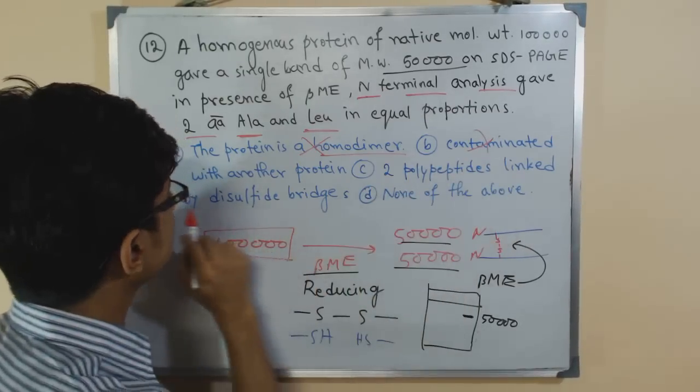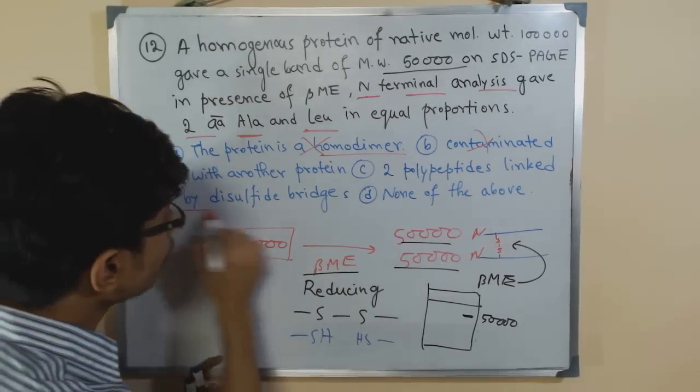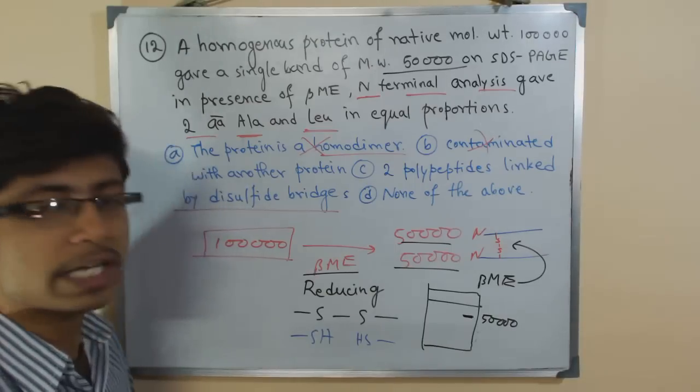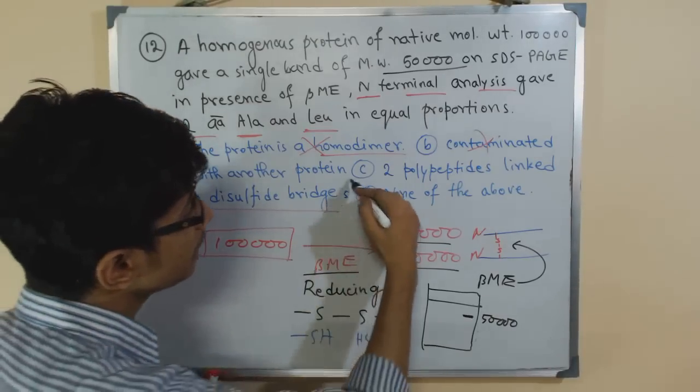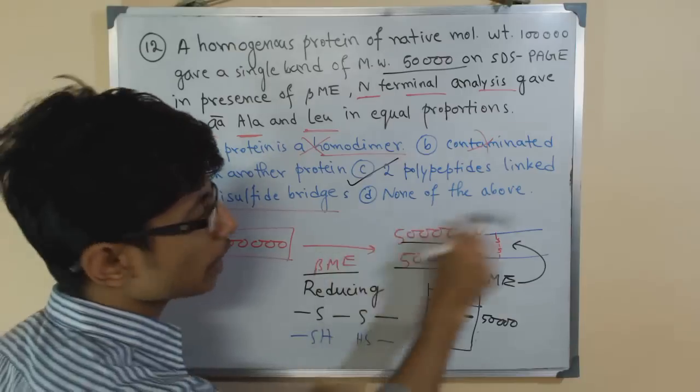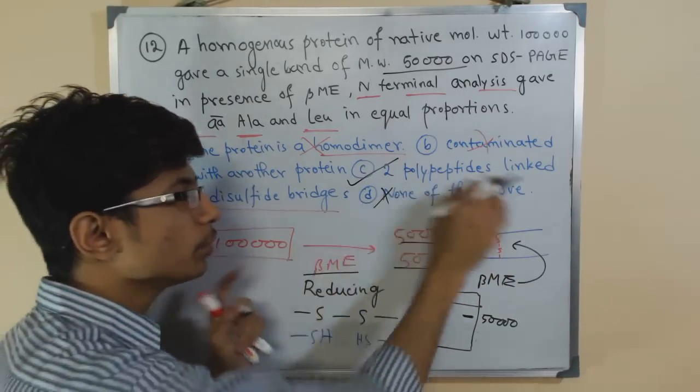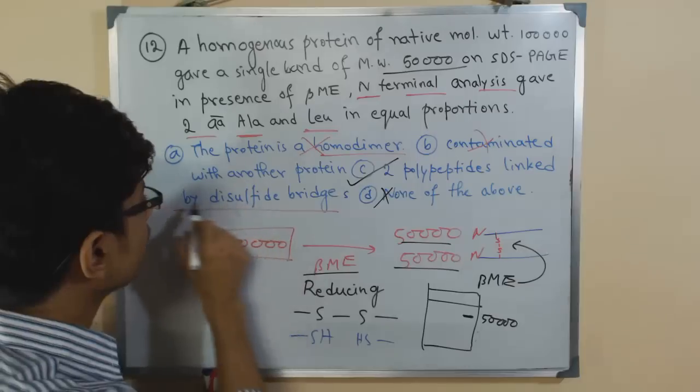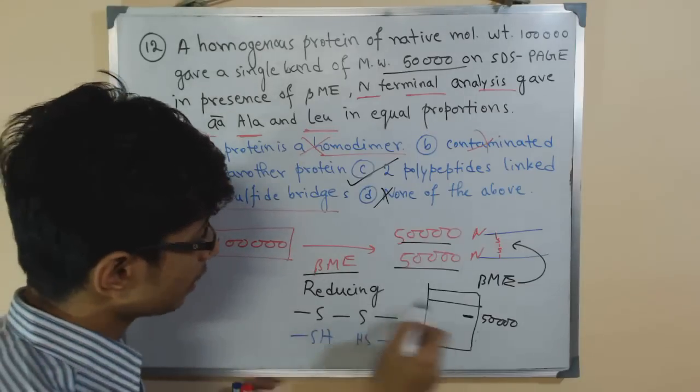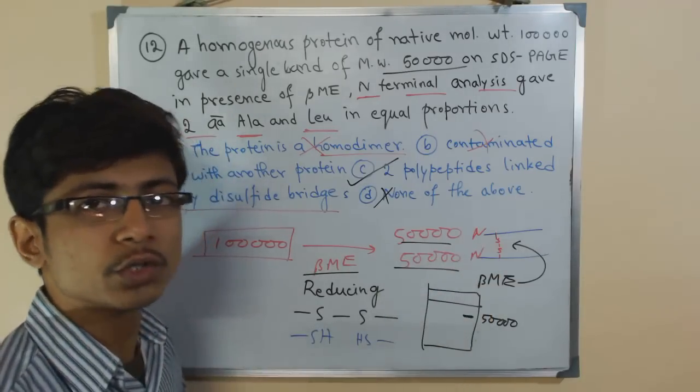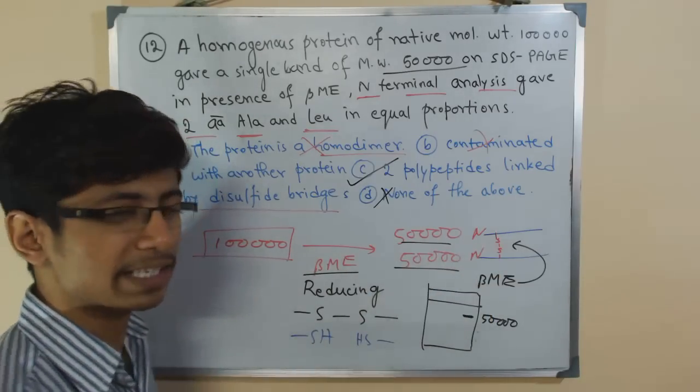Third is the two polypeptides are linked by disulfide bridges. Of course they are linked with disulfide bridges. So option C is going to be the correct answer. So the answer here is that the two polypeptides are linked with each other by a disulfide bridge. And here comes the disulfide bridge that is linking two polypeptide chains together.